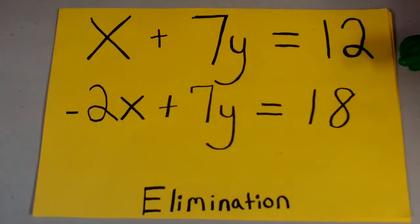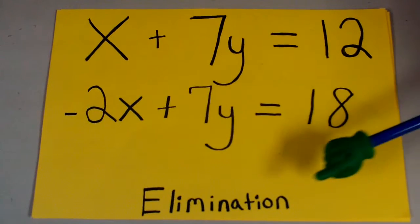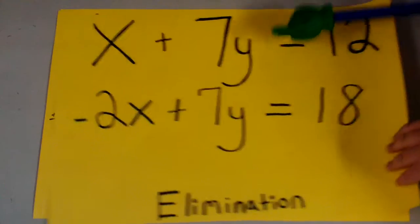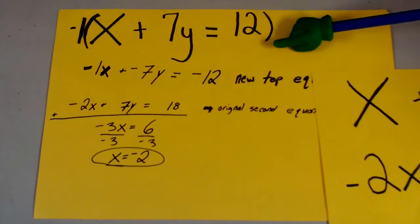Today we are solving the system of linear equations using elimination. First you will multiply x plus 7y equals 12 by negative 1 to get the coefficients of y to be opposite.